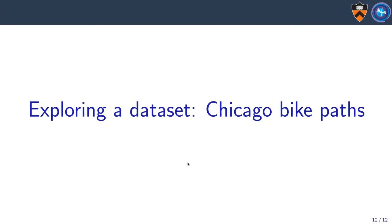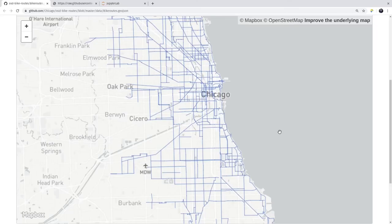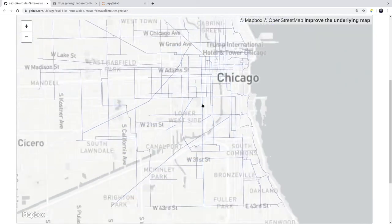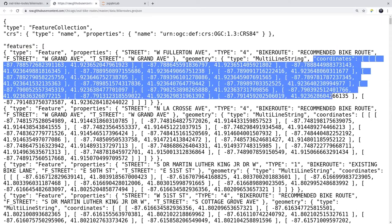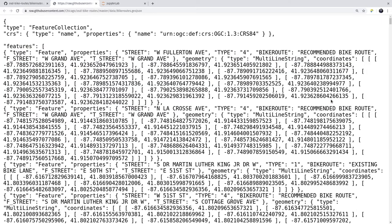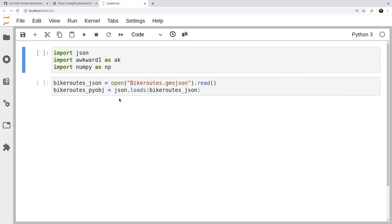Now, I'd like to show how to use Awkward Array, and I'll do it by exploring a data set, one that has nothing to do with particle physics: bikepaths in my hometown of Chicago. This is a GeoJSON file. There are bikepaths all throughout Chicago. This file, in JSON form, shows street names, some metadata, and some latitude-longitude coordinates for all of these paths.